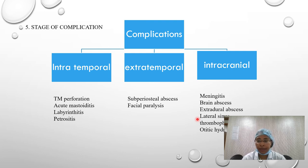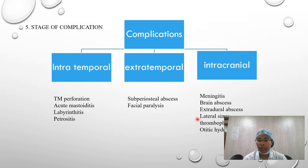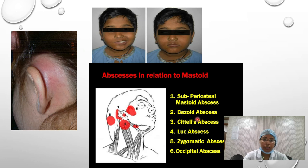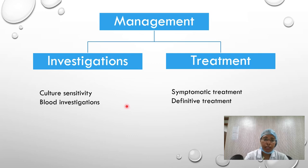Patients with acute otitis media presenting with high-grade fever, headache, and neck rigidity suggest meningitis, requiring prompt IV antibiotics and lumbar puncture. Brain abscess and extradural abscess are very rare complications. Lateral sinus thrombophlebitis involves spread of infection to the lateral sinus; cortical mastoidectomy may be needed to drain accumulated pus. Otitic hydrocephalus, also called benign intracranial hypertension, involves raised intracranial pressure with possibly low-grade fever but no other specific complaints.